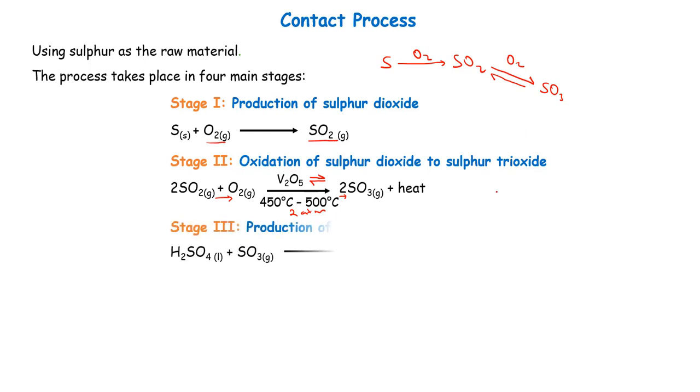Then we have the third stage which is the production of oleum. Now oleum is a thick liquid and it's usually produced whenever we bubble our sulfur trioxide in sulfuric acid concentrated. Our next step will be ensuring that our sulfur trioxide reacts with the sulfuric acid so that we form what we call oleum.